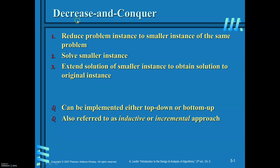As the name itself suggests — decrease and conquer — the first stage is the decrease state and the second stage is the conquering state. In the decrease state, the problem size is to be decreased. The second stage is the conquering state, that is finding the solution. Conquer means find the solution to the original problem. This can be achieved by finding the solution to the smaller instance, then extending the solution of the smaller instance to get the solution for the original problem.